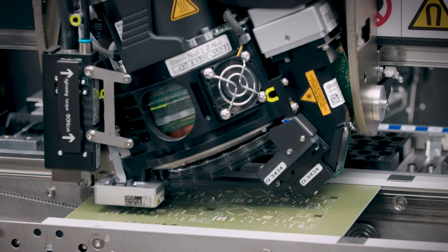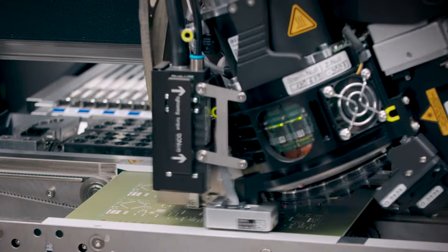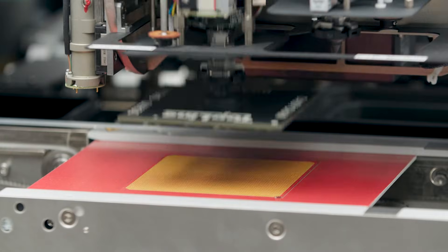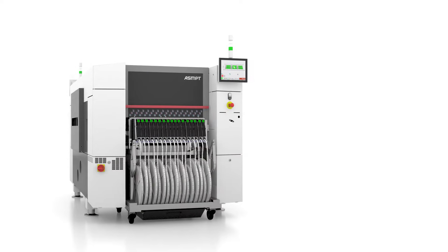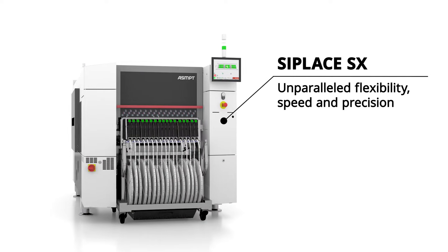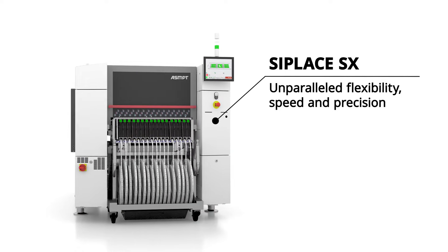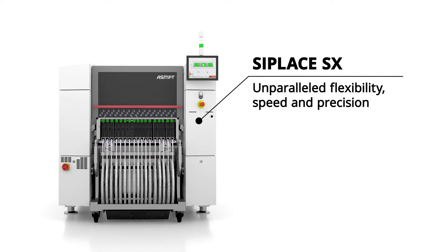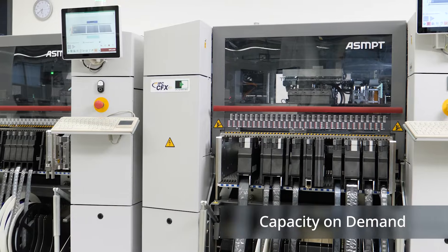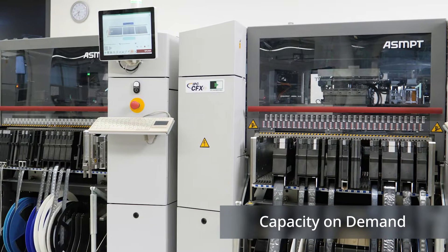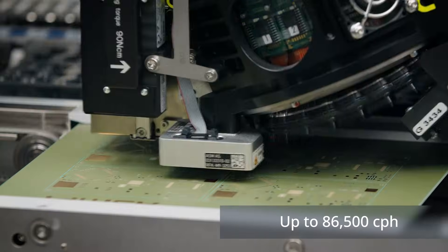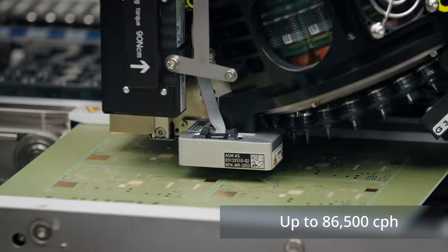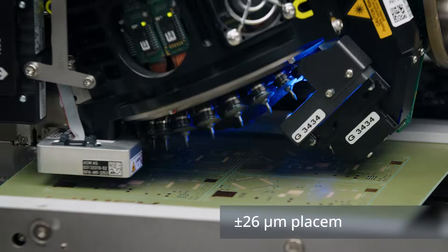In today's fast-moving world of high-mix electronics production, performance and flexibility are everything. The C Place SX from ASMPT is engineered to meet these demands, offering unparalleled flexibility, speed, and precision in SMT factories while allowing production lines to be scaled up or down as needed, up to 86,500 components per hour with placement accuracy down to 26 micrometers.